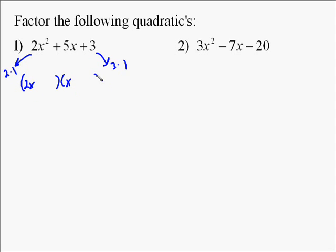So the first thing we need to do is figure out how to find the 2x squared. Well, that's going to be 2x times x. That gives you the 2x squared.